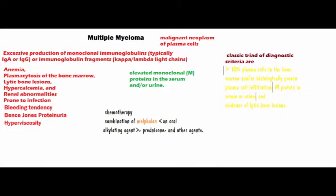The most important protein to remember in multiple myeloma is the Bence Jones light chain protein. These Bence Jones proteins are easily precipitated by the kidney and cause renal failure. As there is a defect in secretion of normal immunoglobulin, there is ineffective defense against infection, so the patient is subjected to recurrent infections. Hyperviscosity is also seen due to the increasing number of plasma cells, and raised ESR with Rouleaux formation — that is, RBC clumping — is observed.